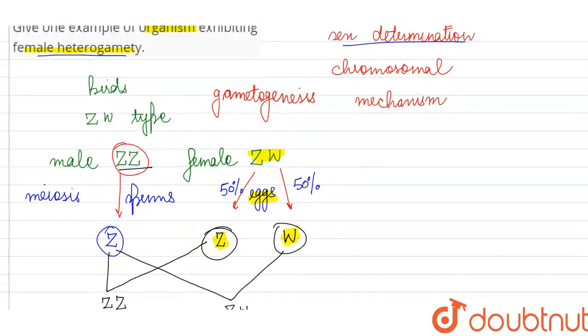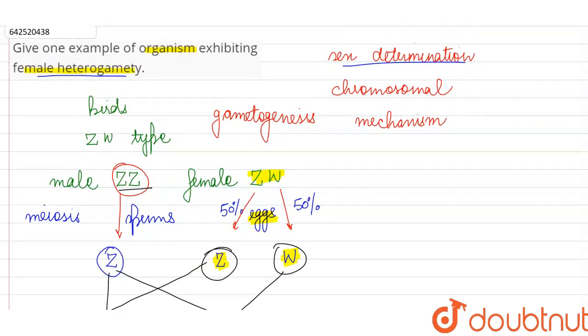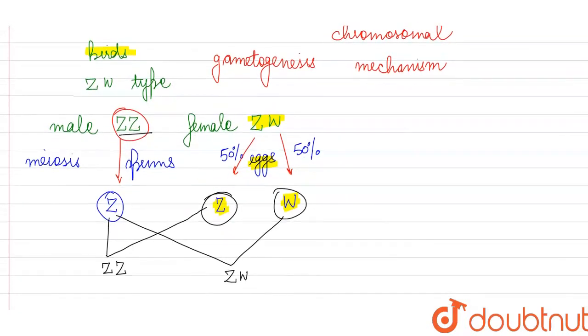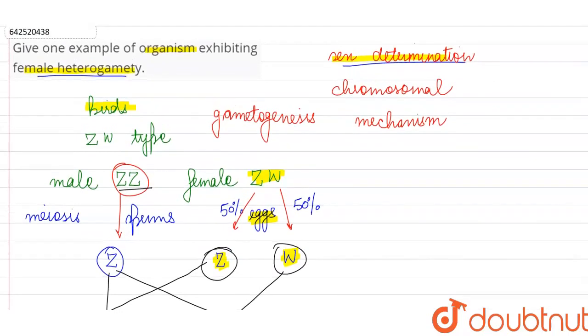So this ZW type of sex determination mechanism is found in the birds. And over here, we are saying ZW in an arbitrary way. Actually, it has nothing to do with the nature of the chromosomes themselves. We are just saying ZW to differentiate them from X and Y. Because we say we have XY type of sex determination in human beings. So just to denote that these are two different chromosomes, this is a different type of sex determination mechanism, we are using the letters Z and W.